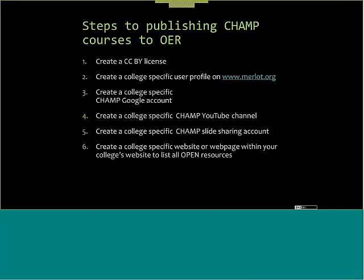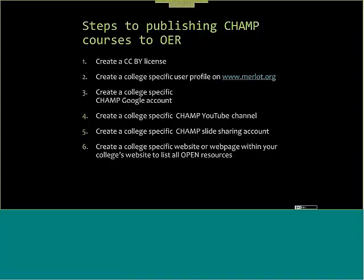The steps to publishing — there are six. You will have already created a CC-BY license. You'll need to create a college-specific user profile on MERLOT.org. It's much easier to create one user profile for the whole CHAMP project rather than having eight different people create profiles, because it's much harder to track your web pages, websites, and courses if eight people are contributing. They can all log in under the same user profile — just create one. Create a college-specific CHAMP Google account. Within that Google account, create a YouTube channel. Create a college-specific CHAMP SlideShare account.